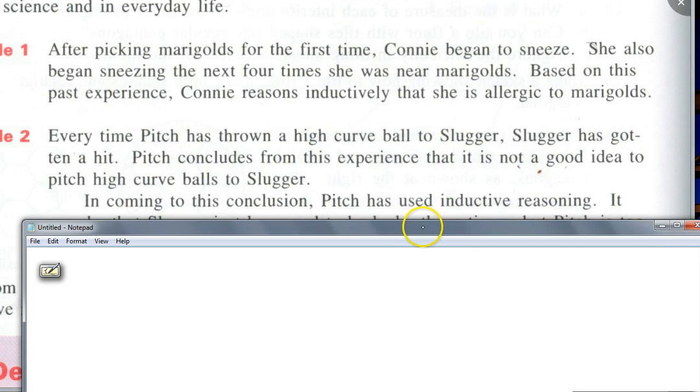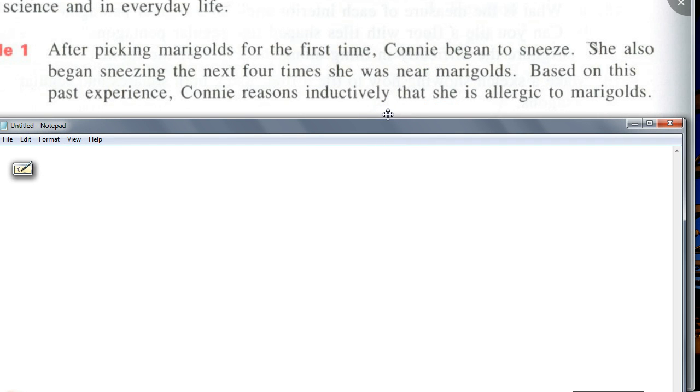After picking marigolds for the first time, Connie began to sneeze. She also began sneezing the next four times she was near marigolds. Based on this past experience, Connie reasons inductively that she is allergic. Yeah, so how is this decision made? Kevin? Inductive, right. So they're using inductive reasoning in this case. This is an example of inductive reasoning. So how are they basing this conclusion on? Yeah, past experience. You see what I mean?